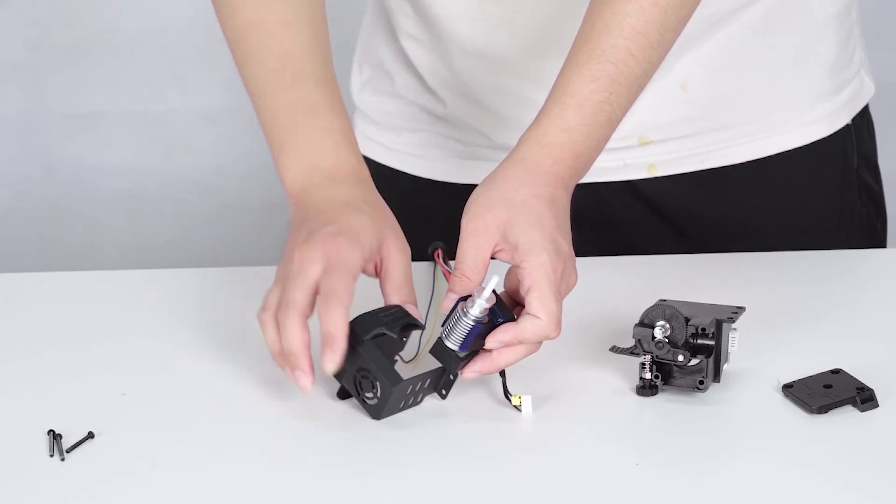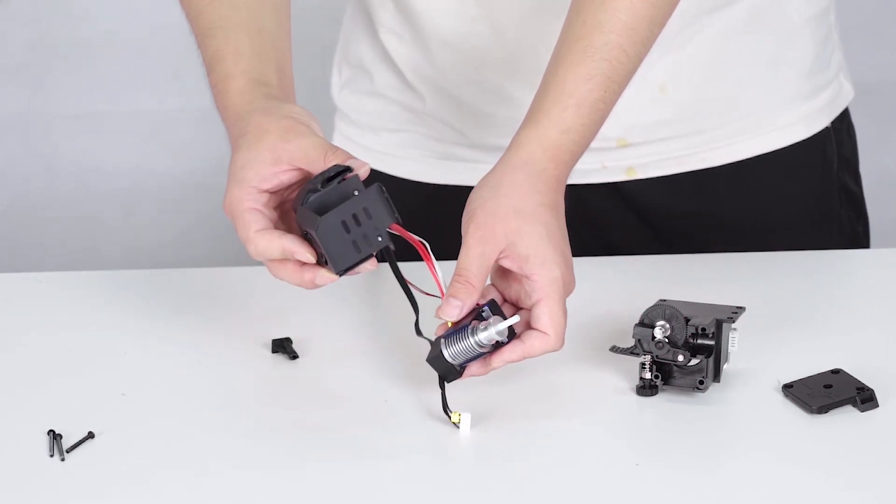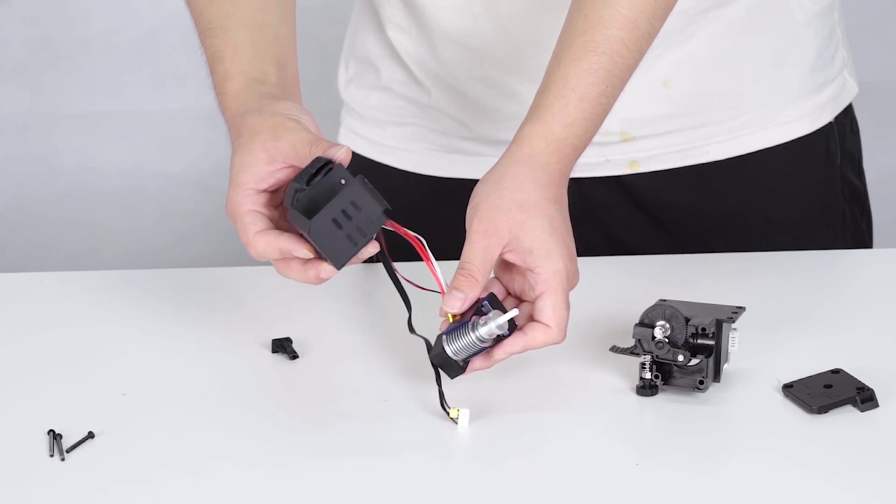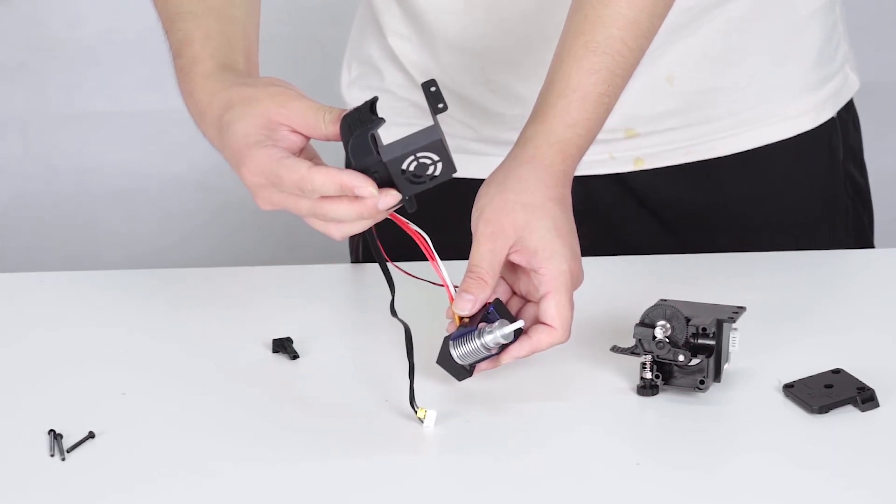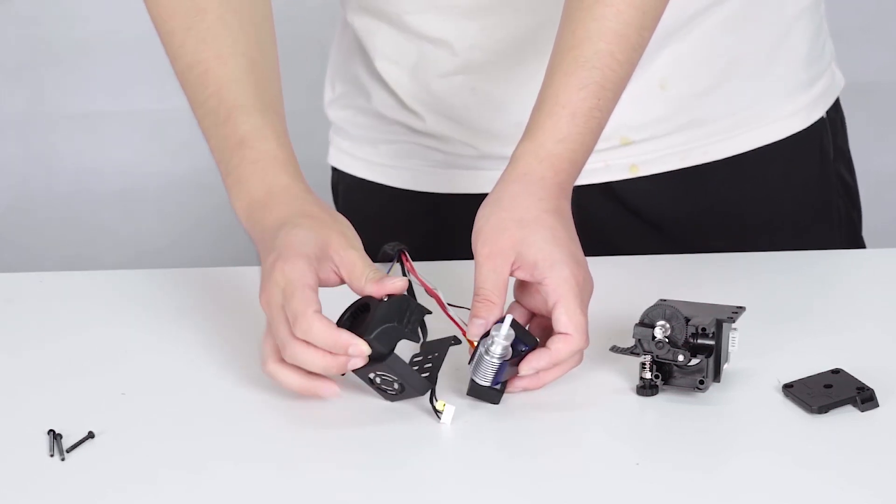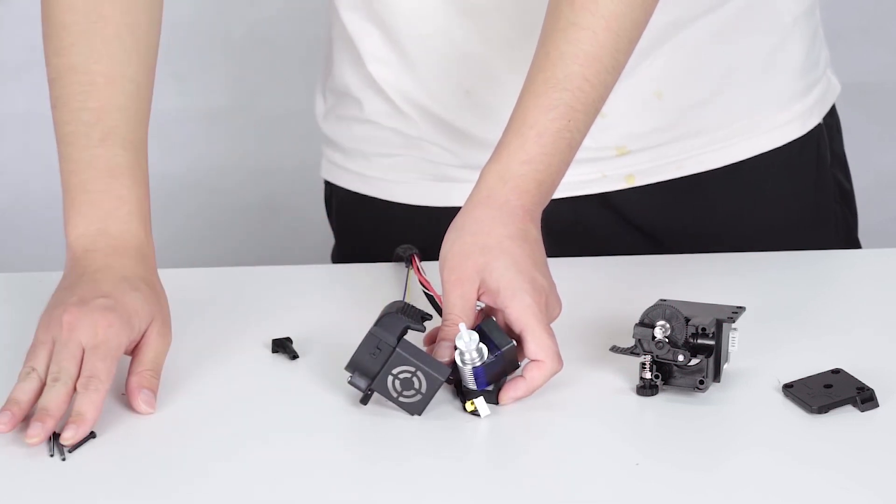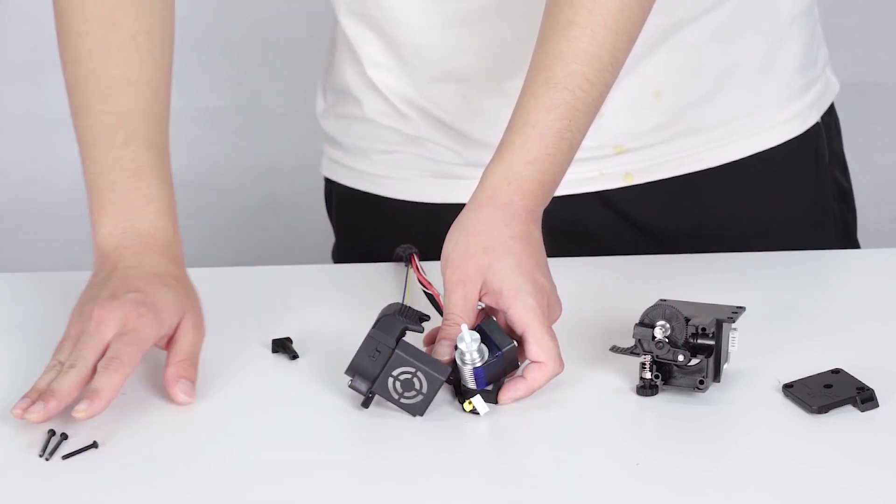And then, let us have a look at the fan shield. Have a look. And I am going to turn to this side. And finally, don't forget these three tiny screws.